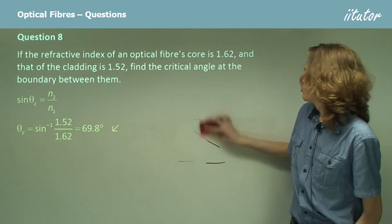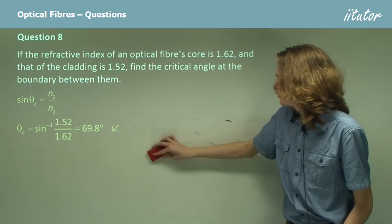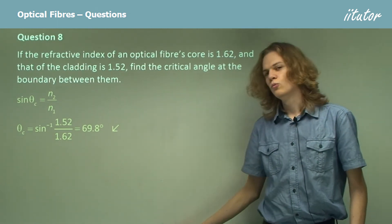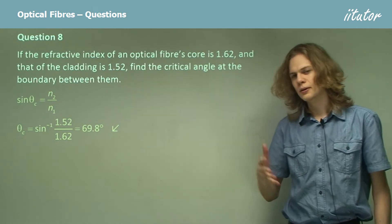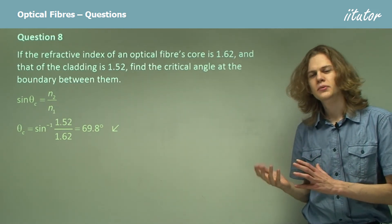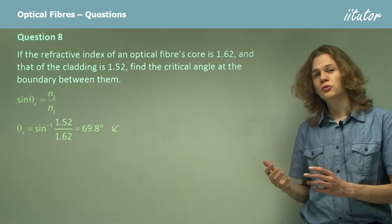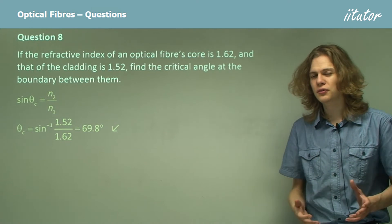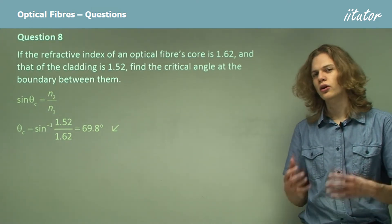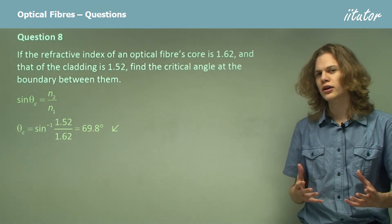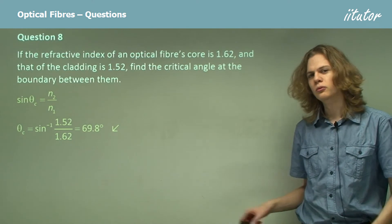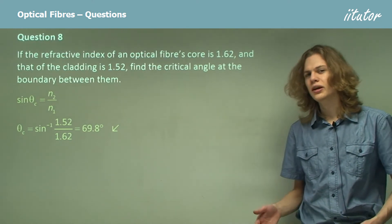Remember that when we get total internal reflection, we're not refracting. The only way to achieve total internal reflection is if we're moving from a material with a very high refractive index into a material with a low refractive index — for example, water into air.